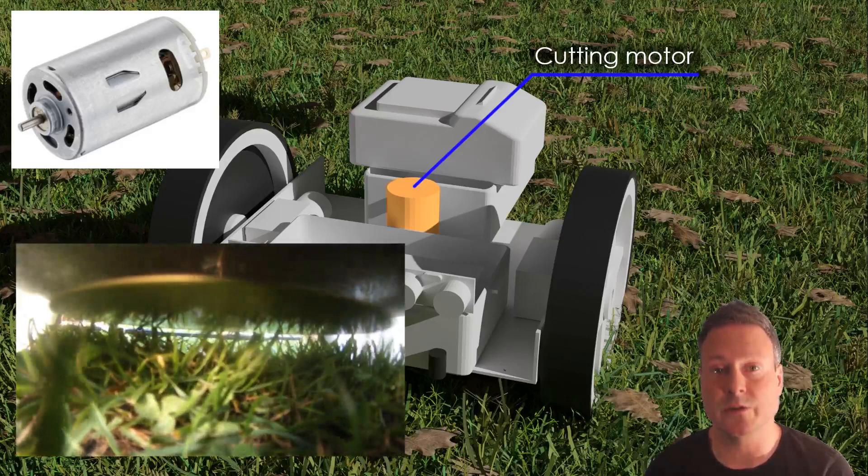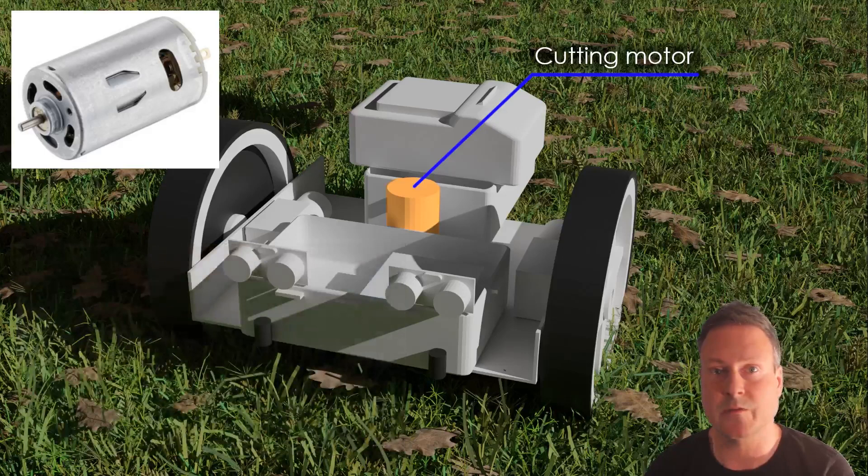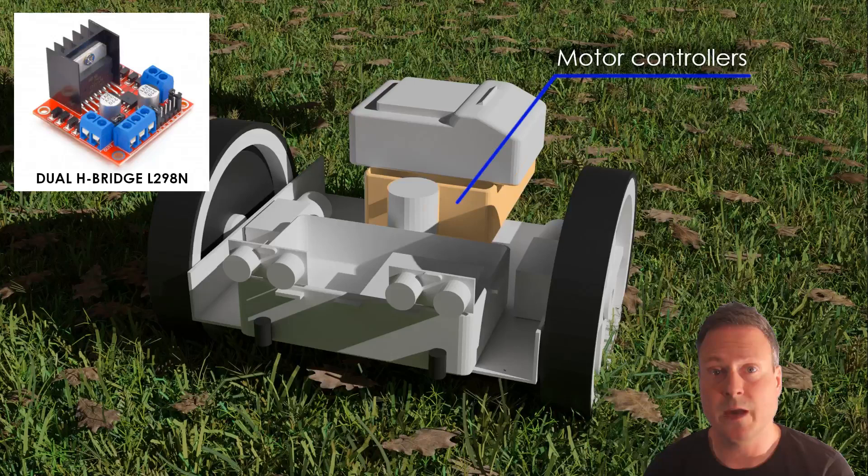In the future it will be good to add an encoder so that the Arduino can read the rotation speed and see if it's running slow to stop it from overheating and to detect where the grass is thick.